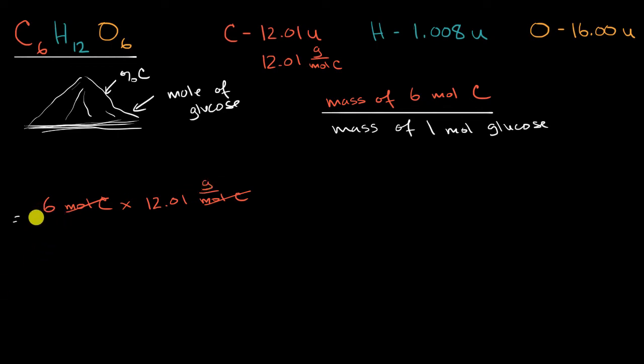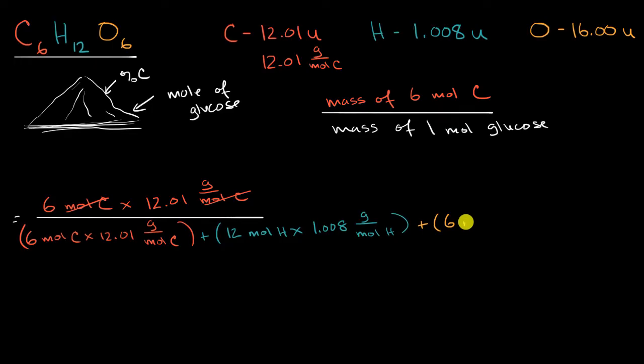And then in the denominator, what are we going to have? Well, the mass of one mole of glucose, for every glucose molecule you have six carbons, 12 hydrogens, and six oxygens. So it's going to be the mass of six moles of carbon, 12 moles of hydrogen, and six moles of oxygen. So it's going to be what we just had up here. It's going to be six moles of carbon times the molar mass of carbon, 12.01 grams per mole of carbon. To that, we are going to add the mass of 12 moles of hydrogen. So 12 moles of hydrogen times the molar mass of hydrogen, which is going to be 1.008 grams per mole of hydrogen, plus six moles of oxygen times the molar mass of oxygen, which is going to be 16.00 grams per mole of oxygen.